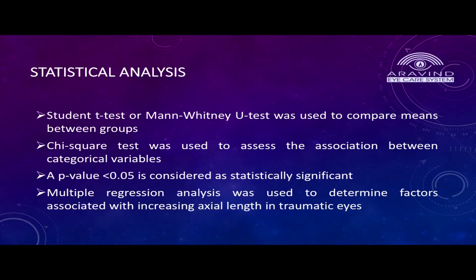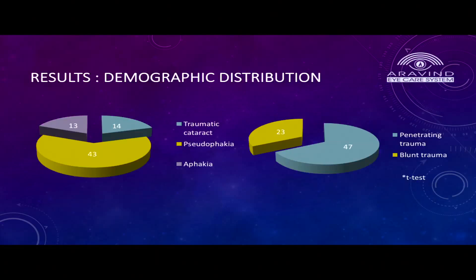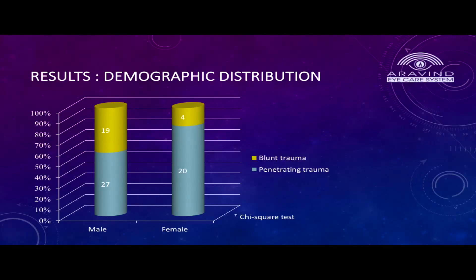Various statistical tests were used for analysis. Out of 70 cases, 13 were aphakic, 14 had traumatic cataract, and 43 were pseudophakic. Penetrating cases were 47 and blunt trauma were 23. The number of cases was more in males compared to females, and in both genders, penetrating trauma was more than blunt.